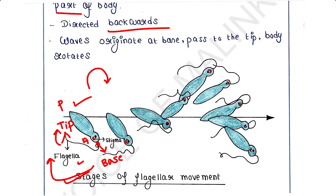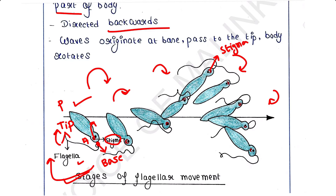You can see in the picture that the stigma is a reference point. Carefully notice that the position of the stigma changes — it is rotated in the clockwise direction. When you observe the position of the stigma, you can understand that the whole body is actually rotating.